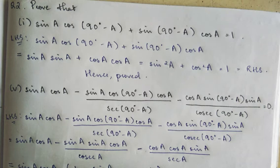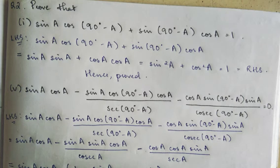Next step: sin A multiplied gives sin square A, and cos A multiplied gives cos square A. So using the formula sin square A plus cos square A equals 1, this equals 1, which is equal to RHS. Hence proved.